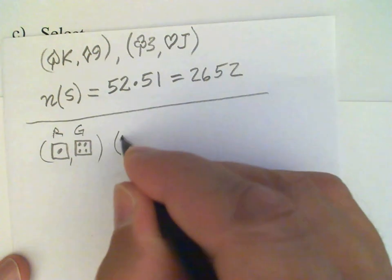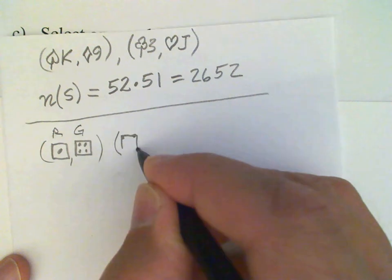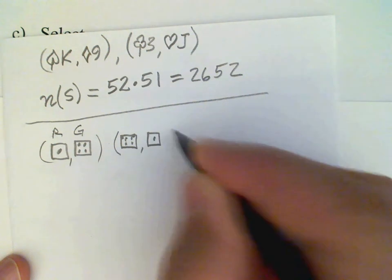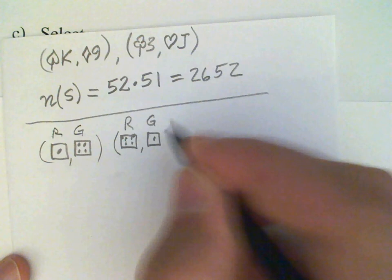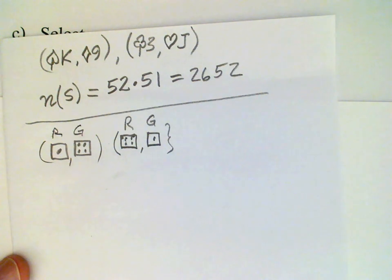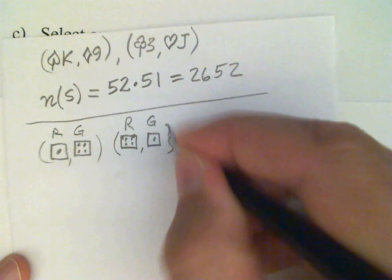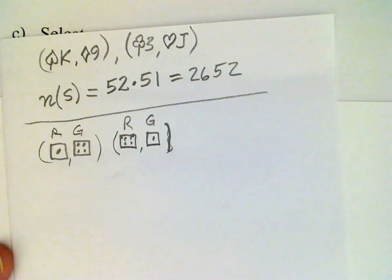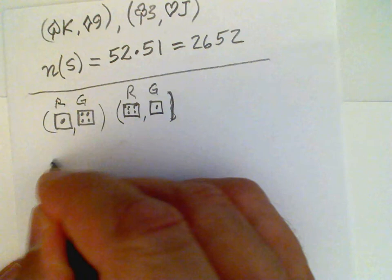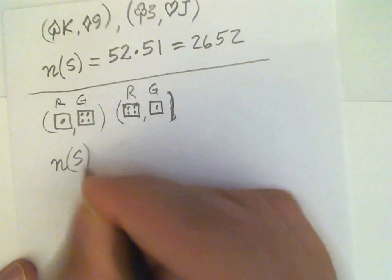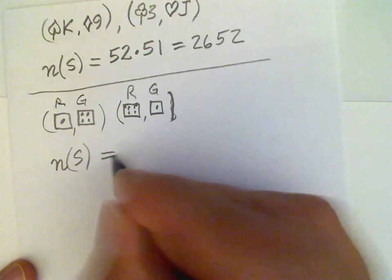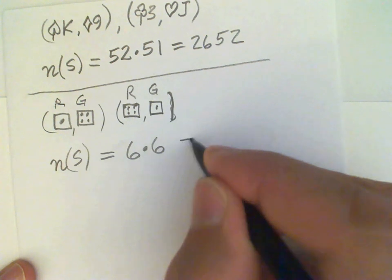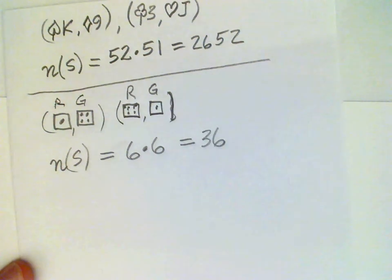We could also have it the other way around: we could have the red die with a four and the green die with a one. And again, to count this sample space, we consider the number of possibilities for the red die, which is six, then multiply that by the number of possibilities for the green die, also six. So the total number of outcomes in this sample space is 36.